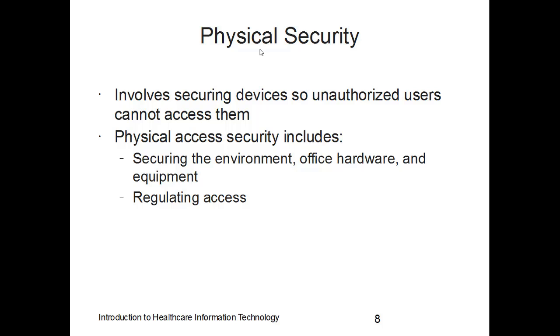Physical security involves securing devices so unauthorized users can't access them. Physical access security includes securing the environment, the office hardware, and the equipment, as well as regulating access to that equipment.